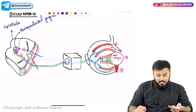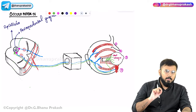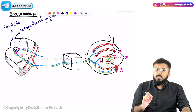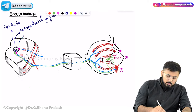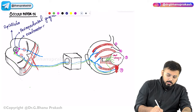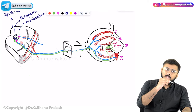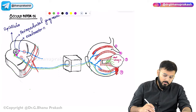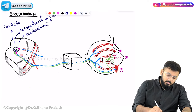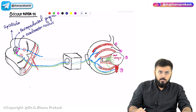On either side of the periaqueductal gray matter there is a pink-colored nucleus, and that is called the oculomotor nerve nucleus. From this oculomotor nucleus you can see a branch running down — this blue-colored branch is the oculomotor nerve.